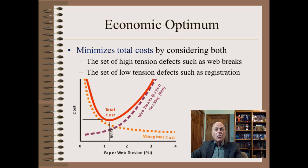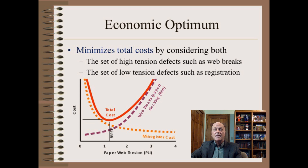Second, on this graph, we plot the total of the set of high tension defects. In film, this might primarily be necking or, in extreme cases, MD wrinkling. In paper, this is almost certainly web breaks. This analysis is totally agnostic to web chemistries, web machines, and problem of interest. You will note that the cost curve of the high tension defects is concave upward, going to infinity on the right side — it must be so. You simply cannot run at tensions approaching web strength. If all you were concerned about were high tension defects, then you would get the absurd recommendation to run not just low tension, but zero tension.